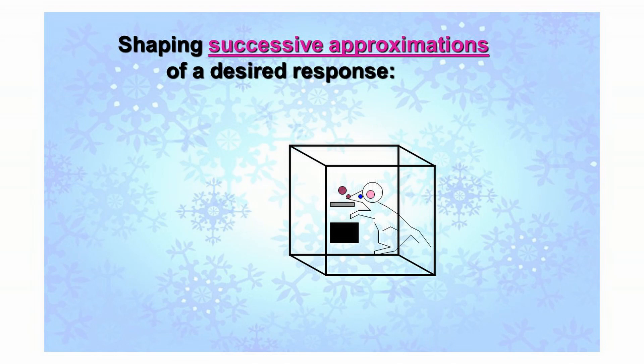Here we have a little rat that has been trained: when the light's on, press that lever down, and you get food out of the opening below. A lot of research has been conducted in this fashion looking at how animals learn. It's operant conditioning — SRS. The light is the discriminative stimulus, lever pressing is the response, and it's a food reinforcer. So by definition, it's positive reinforcement.